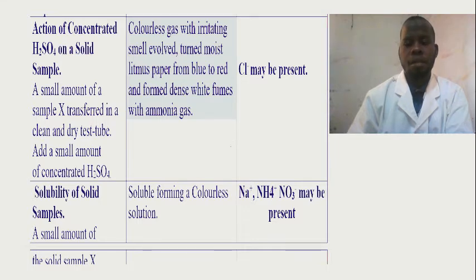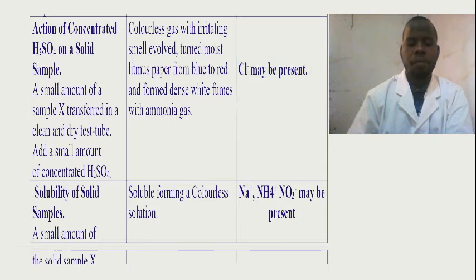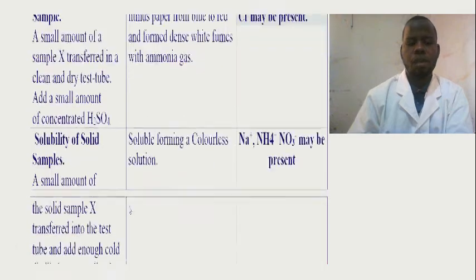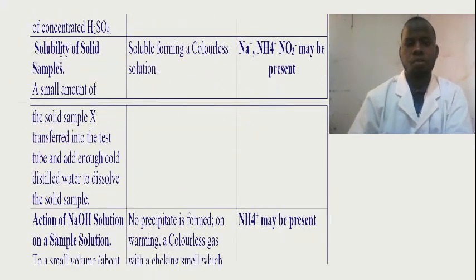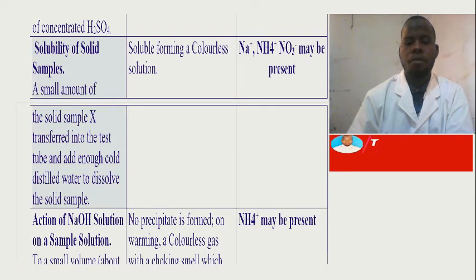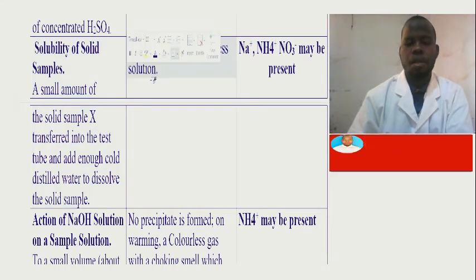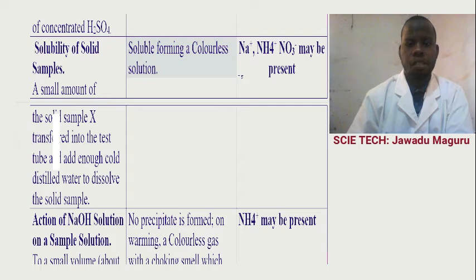Ammonia and chlorine may be present in the case of inferences. Another step is solubility. Solubility means a small amount of solid sample X is transferred in a test tube and dissolved in cold water. The observation: it is soluble, forming a colorless solution. The inference: sodium, ammonium, and nitrate may be present.